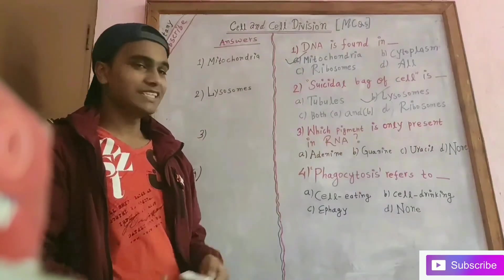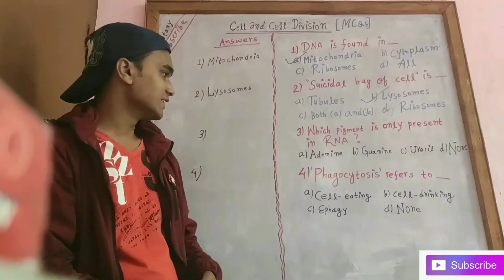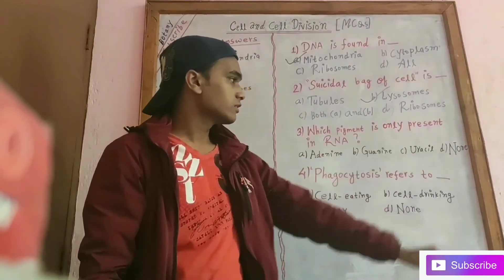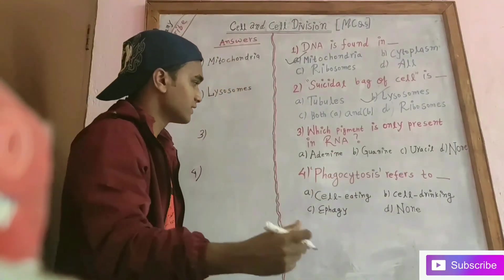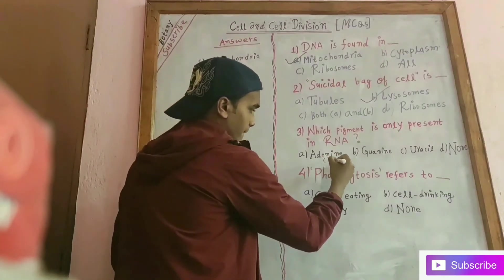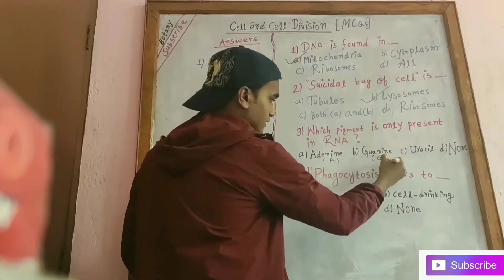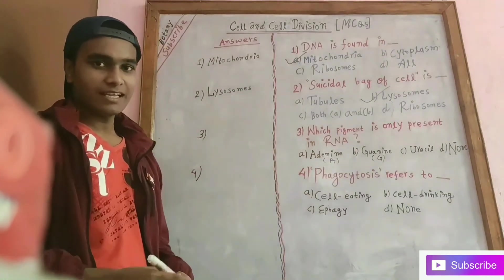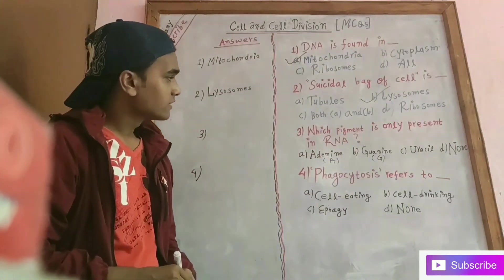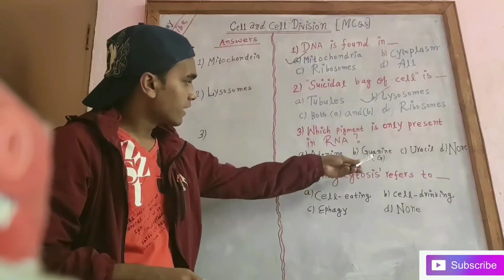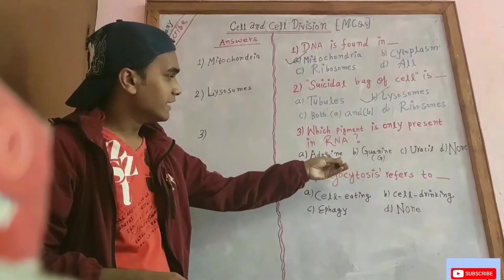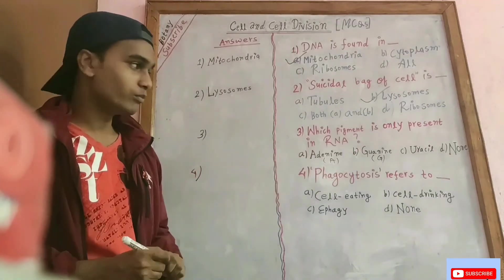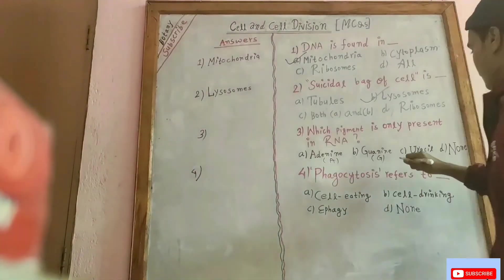Regarding nucleotide bases in RNA — adenine, guanine, cytosine, and uracil are present in RNA. Adenine, guanine, and cytosine are present in DNA as well as RNA. Therefore, uracil is only present in RNA, not in DNA.